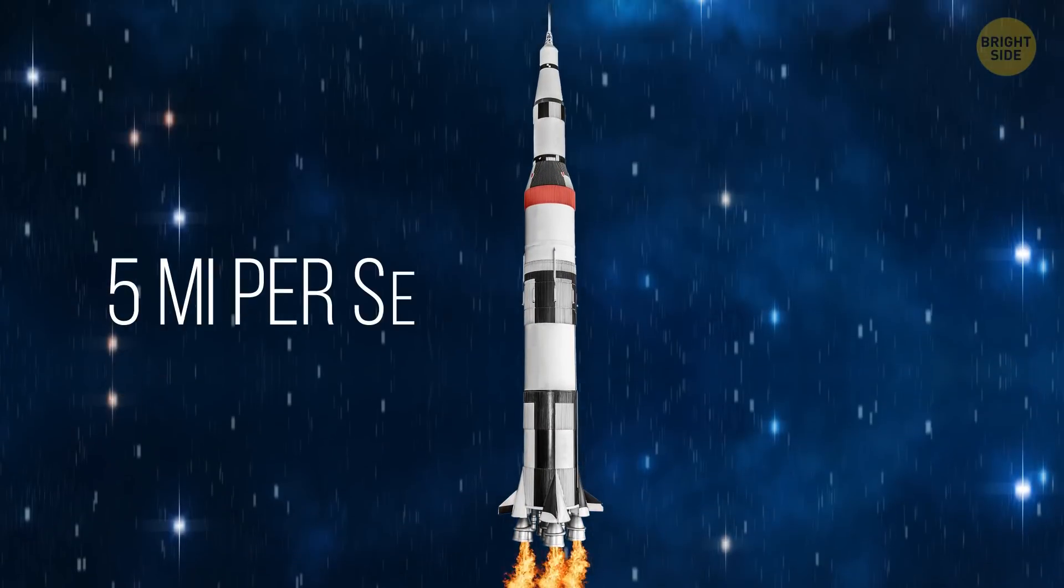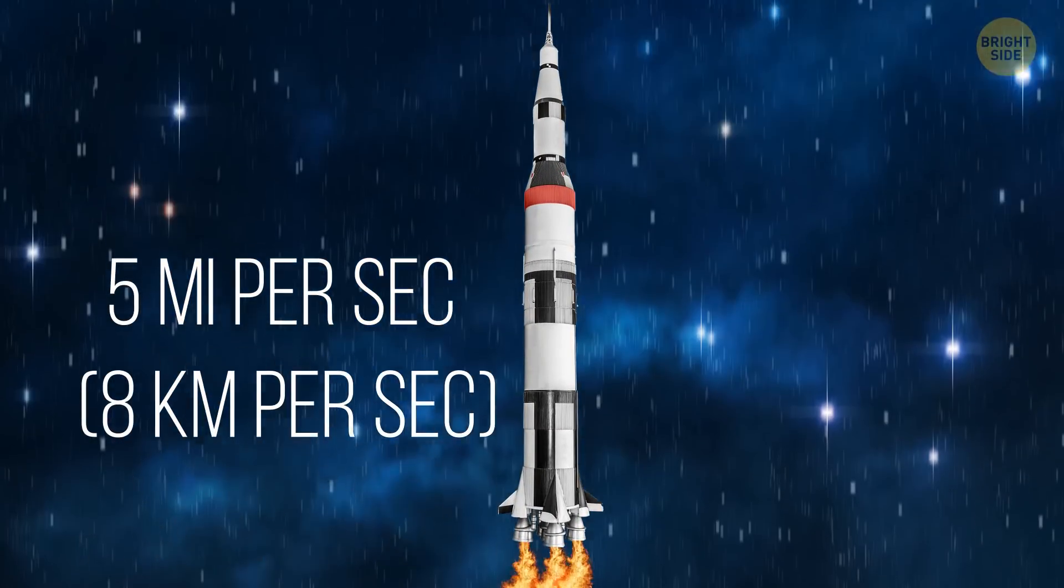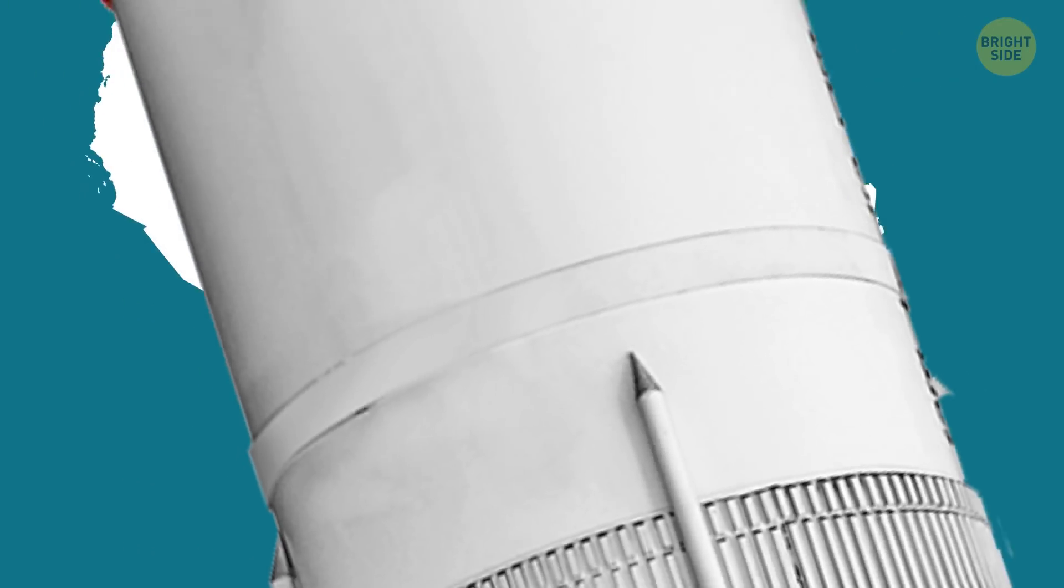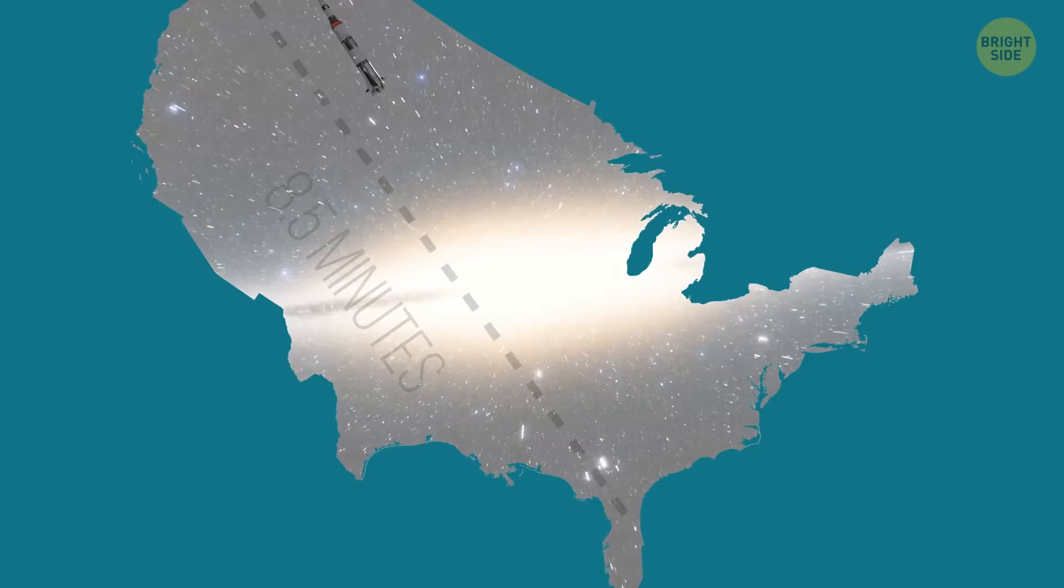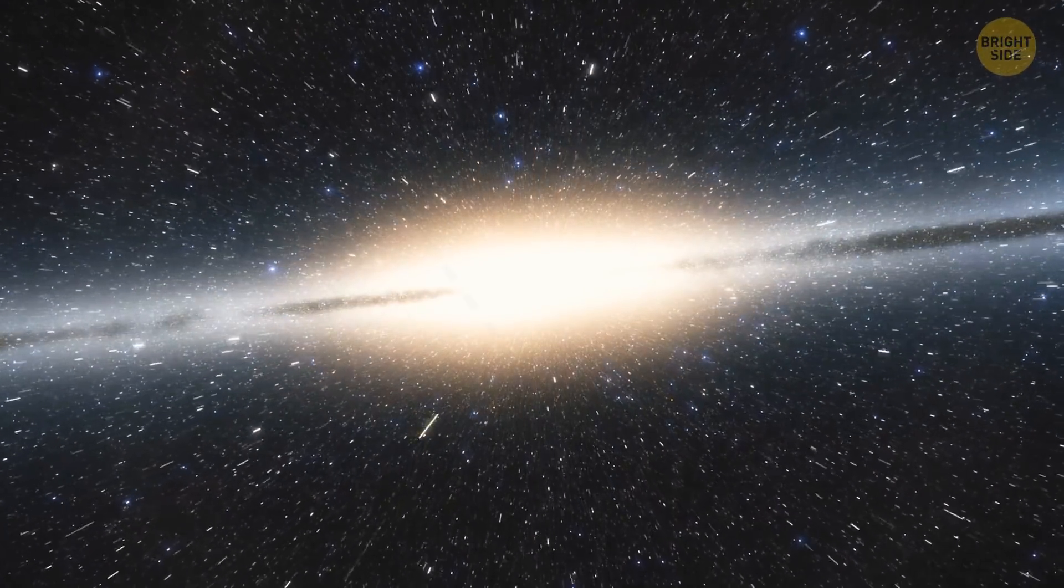This way, we can make the rocket move at almost 5 miles per second. At that speed, you could cross the United States from coast to coast in a mere 8.5 minutes. But if we talk about space, that's very slow.